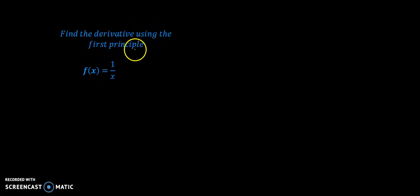Find the derivative using the first principle. Function f of x here is 1 by x. Now we know that the derivative of f of x by the first principle is given by f prime of x is equal to limit of f of x plus h minus f of x upon h as h approaches 0.